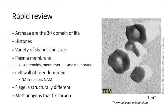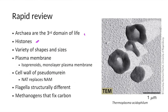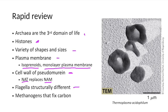Quick review: Archaea are the third domain of life. They do have histones like eukarya, but they are different from eukaryal histones, whereas bacteria don't have histones at all. They come in a variety of shapes and sizes — some similar to bacteria, some similar to eukarya, some completely different. Their plasma membrane is completely different from eukaryal or bacterial plasma membranes, containing isoprenoids rather than fatty acids, and some even have a monolayer instead of a bilayer. Their cell wall is composed of pseudomurein where NAT replaces NAM. They do have flagella, but it's structurally different from both bacteria and eukarya. And the most studied group are the methanogens, able to fix carbon from an inorganic to an organic form usable by other organisms.